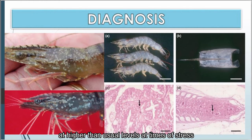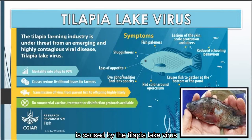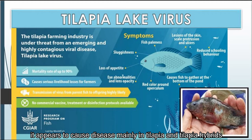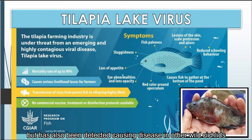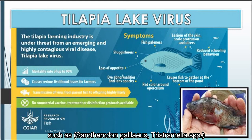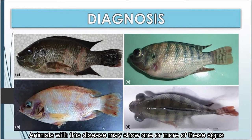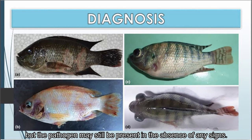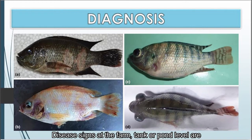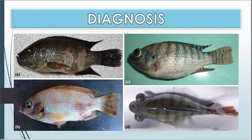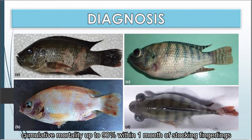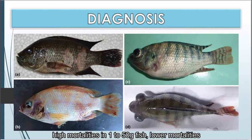The tilapia lake virus (TiLV) disease is caused by the tilapia lake virus. It appears to cause disease mainly in tilapia and tilapia hybrids such as Oreochromis species and Tilapia species, but has also been detected in other wild cichlids such as Sarotherodon galileus and Tristramella species. Animals with this disease may show one or more signs, but the pathogen may still be present in the absence of any signs. Disease signs include sudden unexpected increase in mortalities greater than 2% per day over several days during summer months, and cumulative mortality up to 90% within one month of stocking fingerlings into freshwater or brackish water ponds.